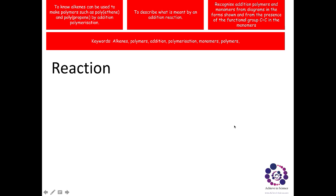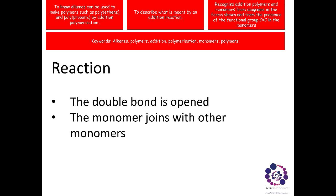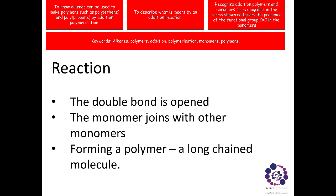We then use this monomer in the reaction, and therefore within the reaction, first of all the double bond is opened. Then the monomers can join together with other monomers to produce a long-chain molecule, which we refer to as a polymer. Poly meaning many, so many repeating molecules of the same type.